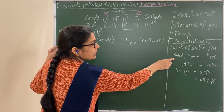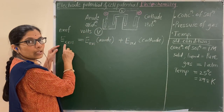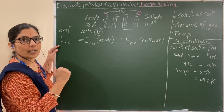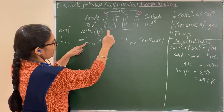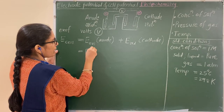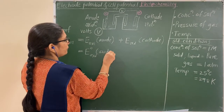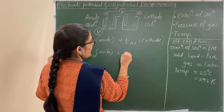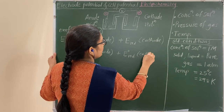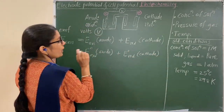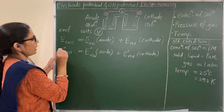If you keep these standard conditions and then measure the potential and find out the cell potential, that is called the standard potential. The oxidation potential measured under standard conditions is the standard oxidation potential at the anode. The reduction potential measured under standard conditions is the standard reduction potential at the cathode. Ultimately, we get the standard cell potential.